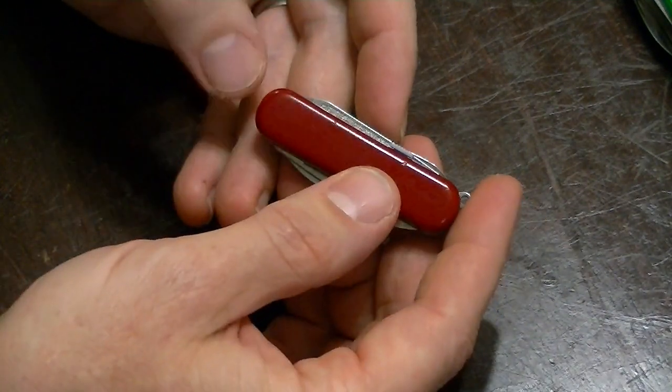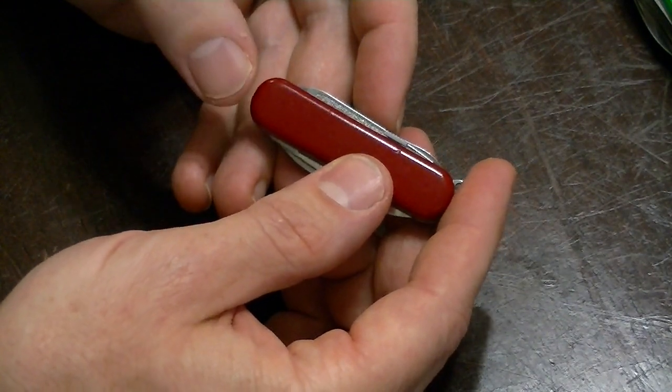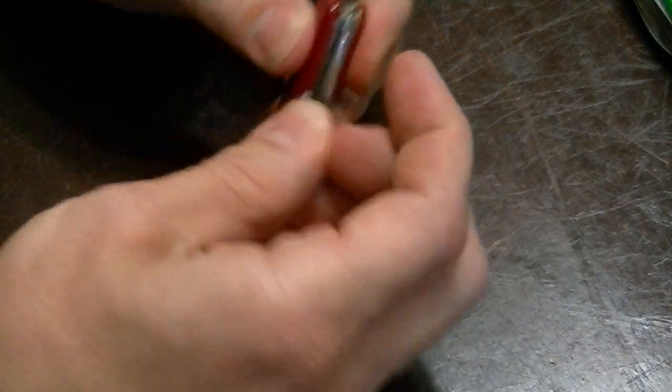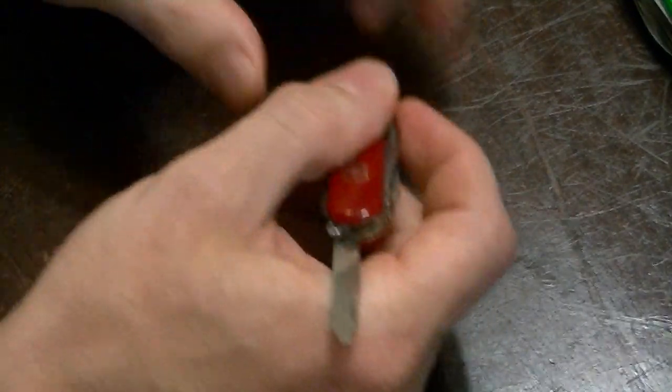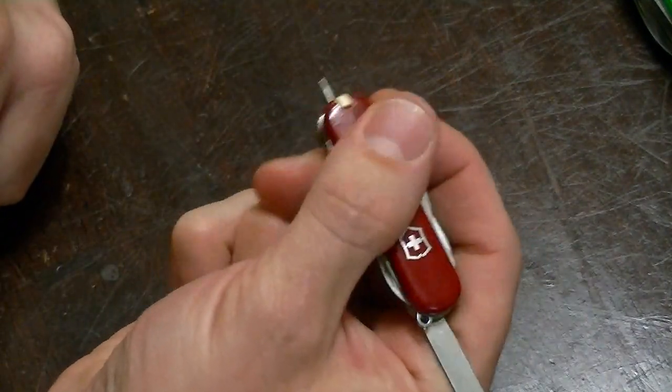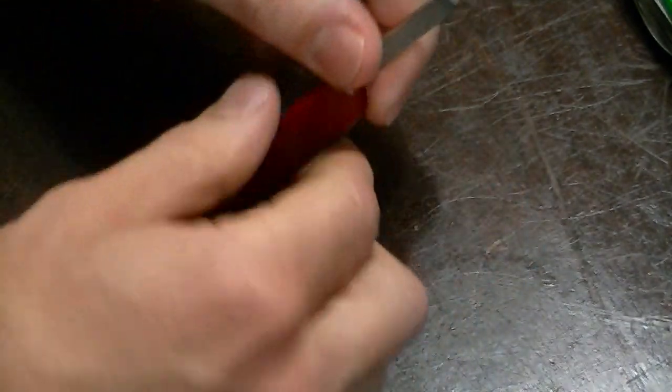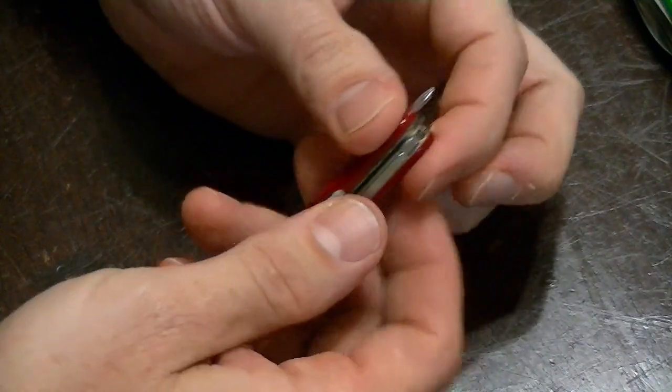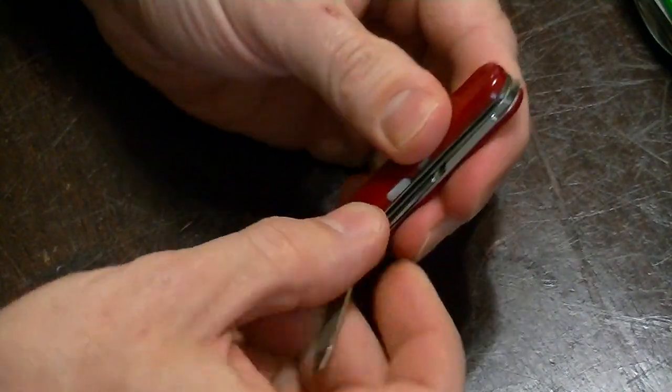Incidentally, instead of having tweezers over here, they've got a ballpoint pen inside the handle scale. And then you fold out your nail file, and you can write with it like that. I find that more useful in an office job than tweezers.